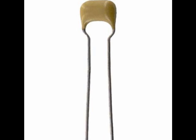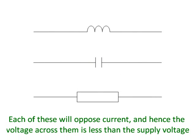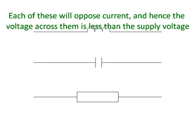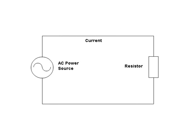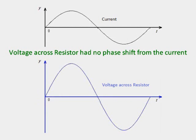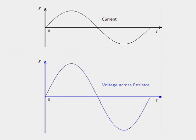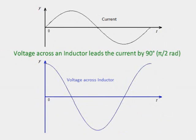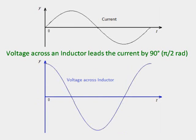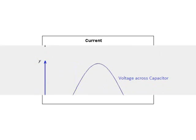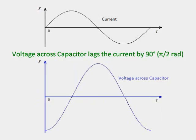Each of these will oppose current flow from an AC source. For resistors, the voltage drop is in phase with the current flowing through — there is a phase difference of zero degrees between voltage and current. For inductors, the voltage drop is 90 degrees ahead, or leading, with the current going through. In the case of capacitors, the voltage drop is 90 degrees behind, or lagging, with the current through the capacitor.